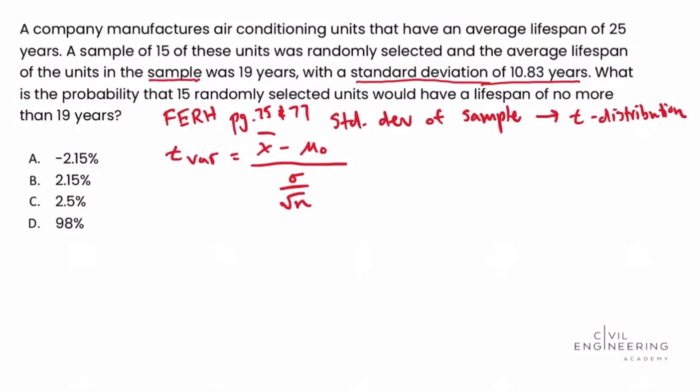So what we need to do is plug in our variables and solve for the T variable, and we'll call this step 1. So let's look at what we're given in the problem statement. We know that x bar is the sample mean, which is given as 19 years.